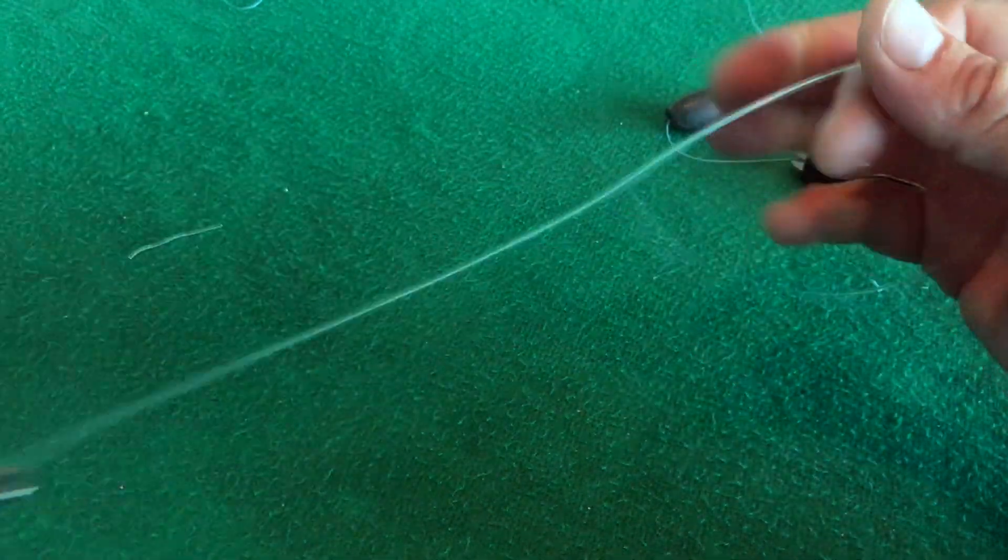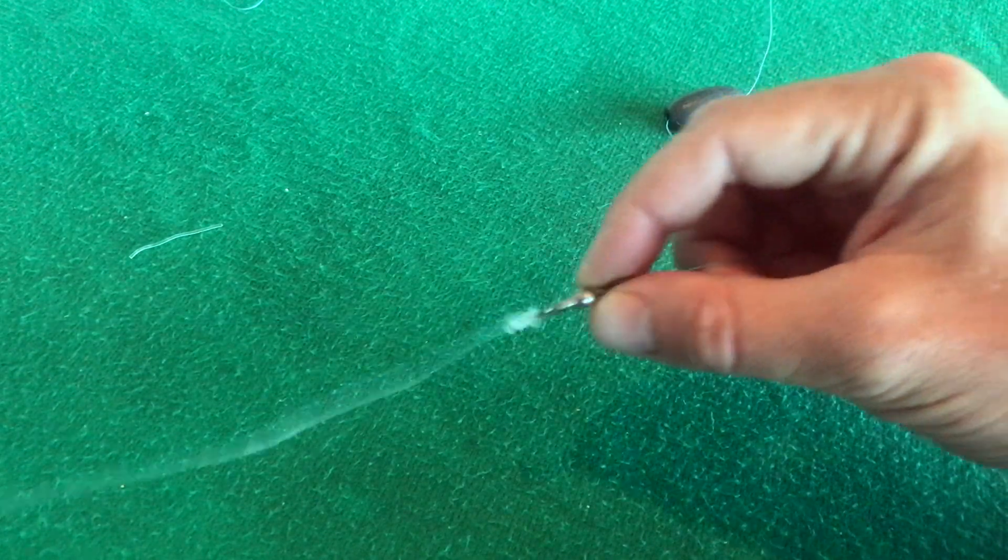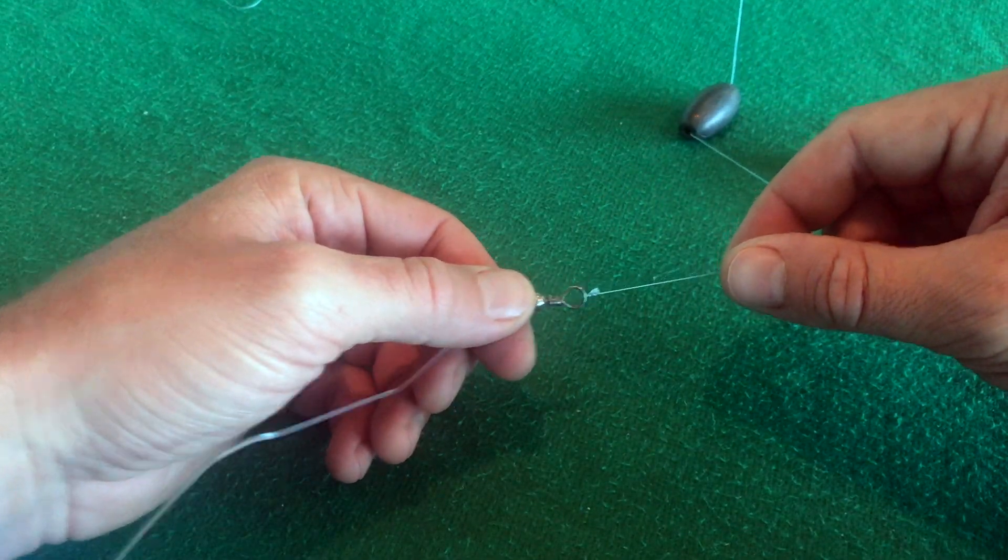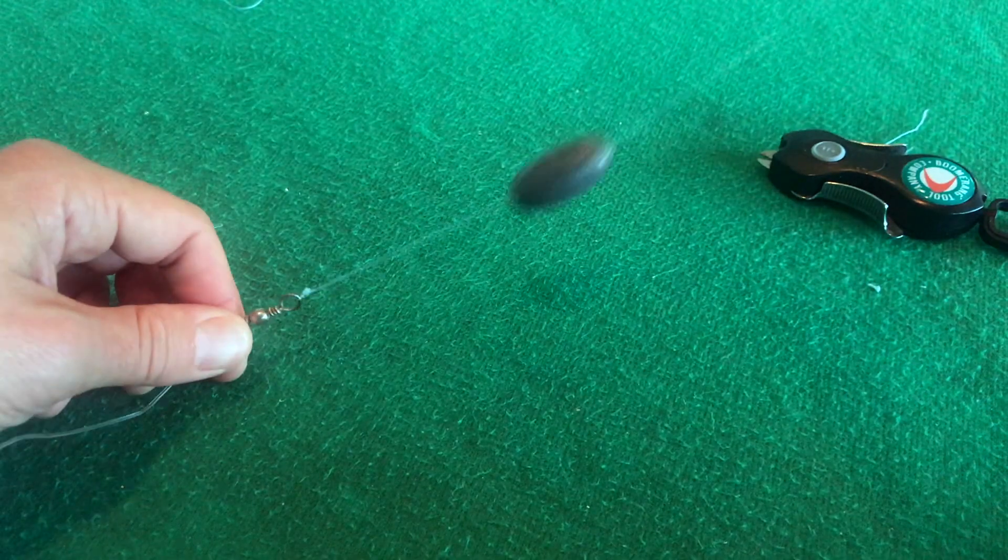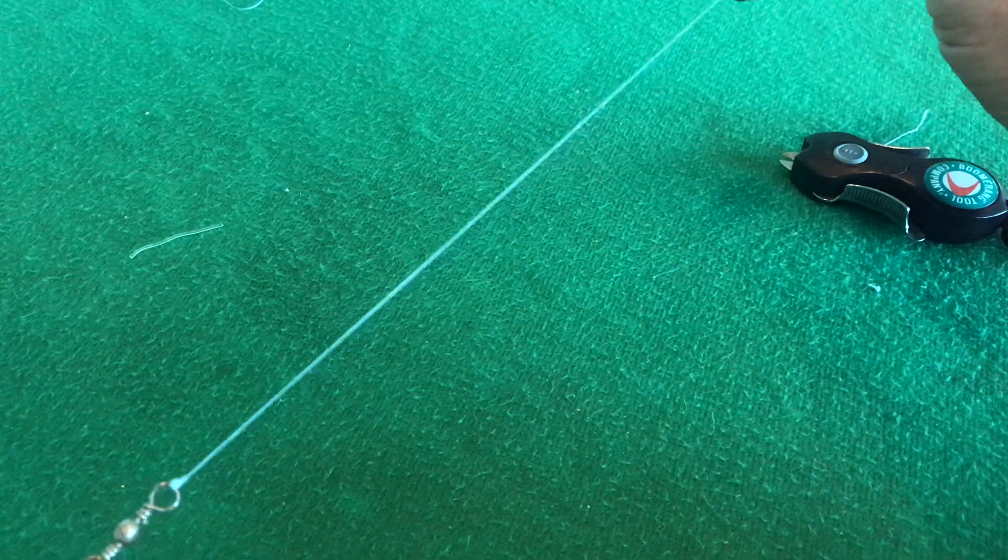Alright. Now, we've got a snelled hook to a swivel that's got a cinch knot attached to the other cinch knot that has our main line attached with our sliding weight. That is a sliding sinker rig.